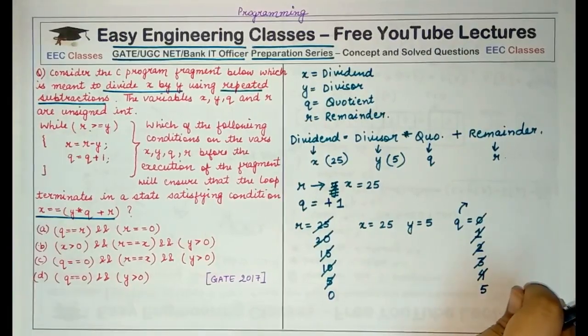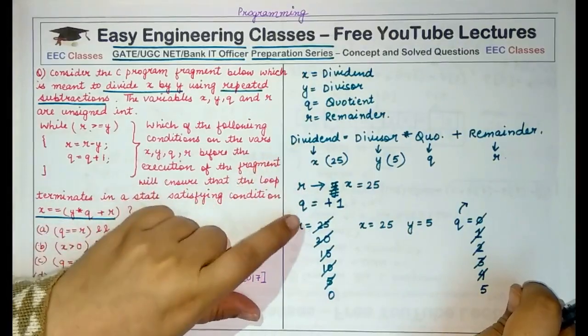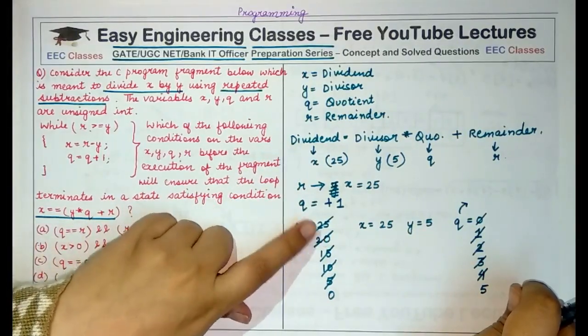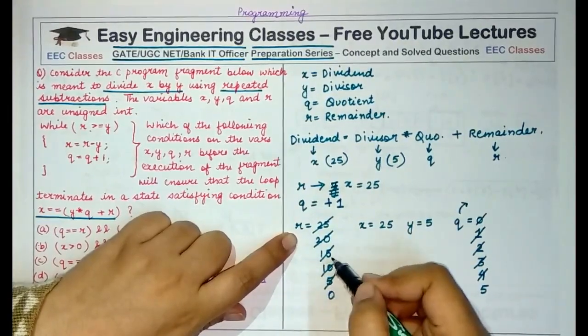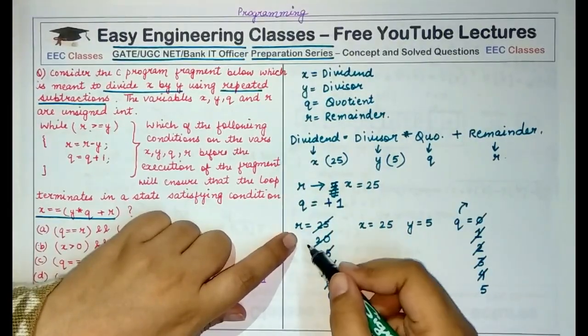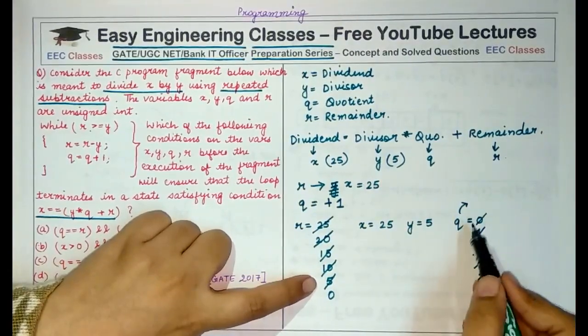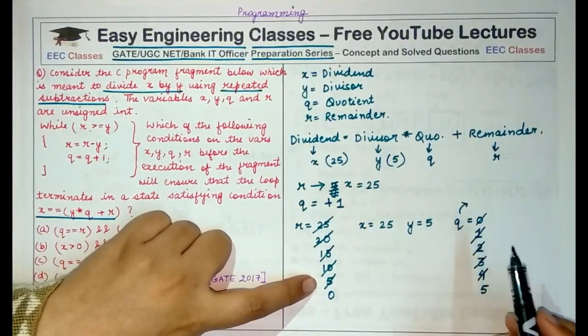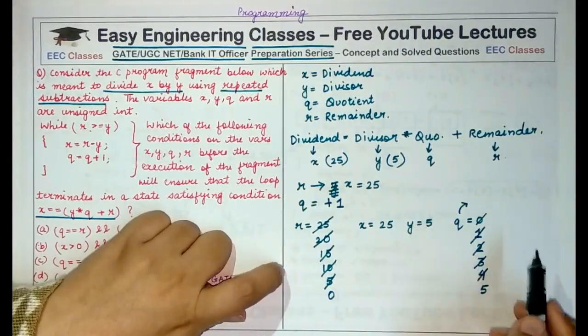So what we are actually doing is copying the value of the dividend into the remainder, subtracting the value of the divisor from this value and counting the total number of subtractions that we can make before the remainder becomes less than the divisor.